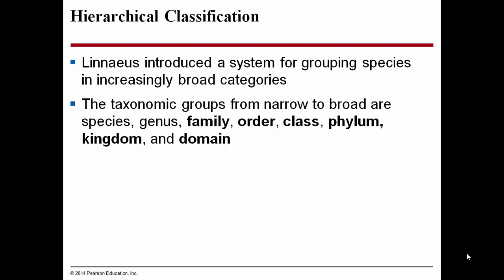Linnaeus introduced a system for grouping species in increasingly broad categories. The taxonomic groups from narrow to broad are: species, genus, family, order, class, phylum, kingdom, domain. One way to remember this is with the mnemonic device in reverse order: King Philip Cried Out For Good Soup — Kingdom, Phylum, Class, Order, Family, Genus, Species.